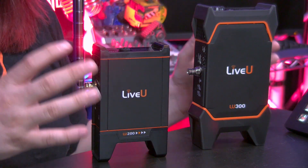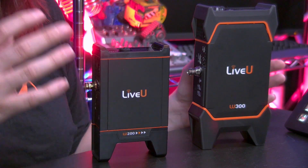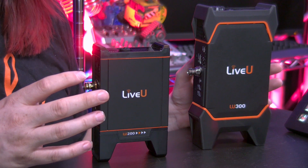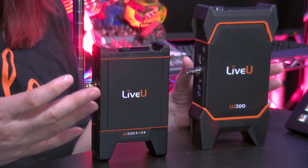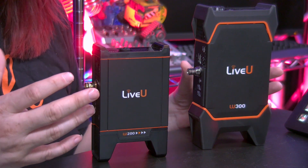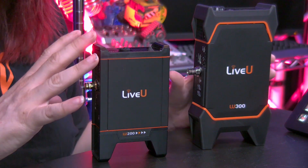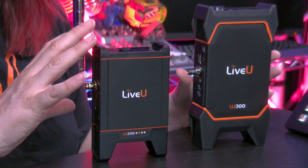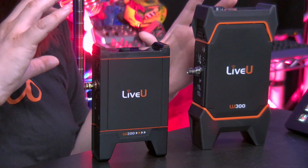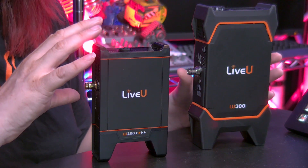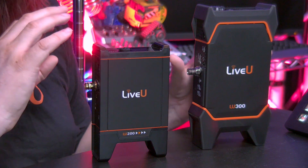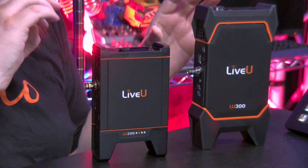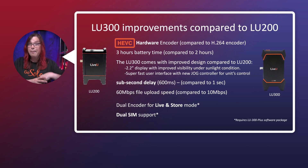Both connect to the LiveU Central server, your LU200 and LU400 on-premise server, or a cloud-based server. Both have store-and-forward, SDI and HDMI connectivity, internal 4G modems, ethernet, and Wi-Fi — that's all the same.